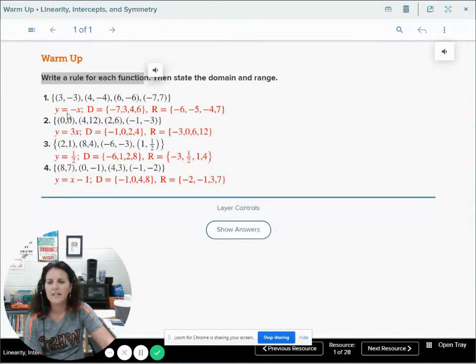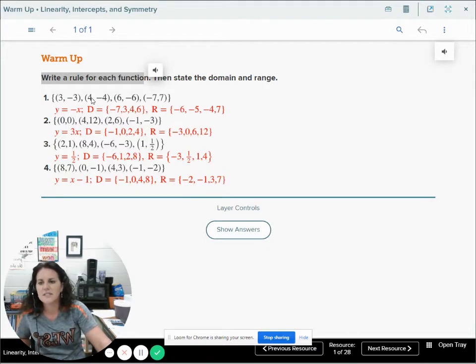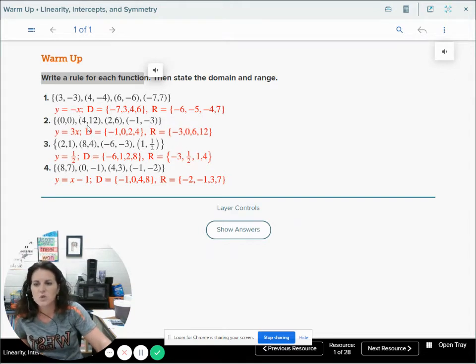If we look at the answers, our domain is negative 7, 3, 4, and 6 - all of the x values in order from least to greatest. Then the y values: negative 6, negative 5, negative 4, and 7. Then it said to write a rule for each function. The rule here is y equals negative x. Let's try it out and see if this rule works.